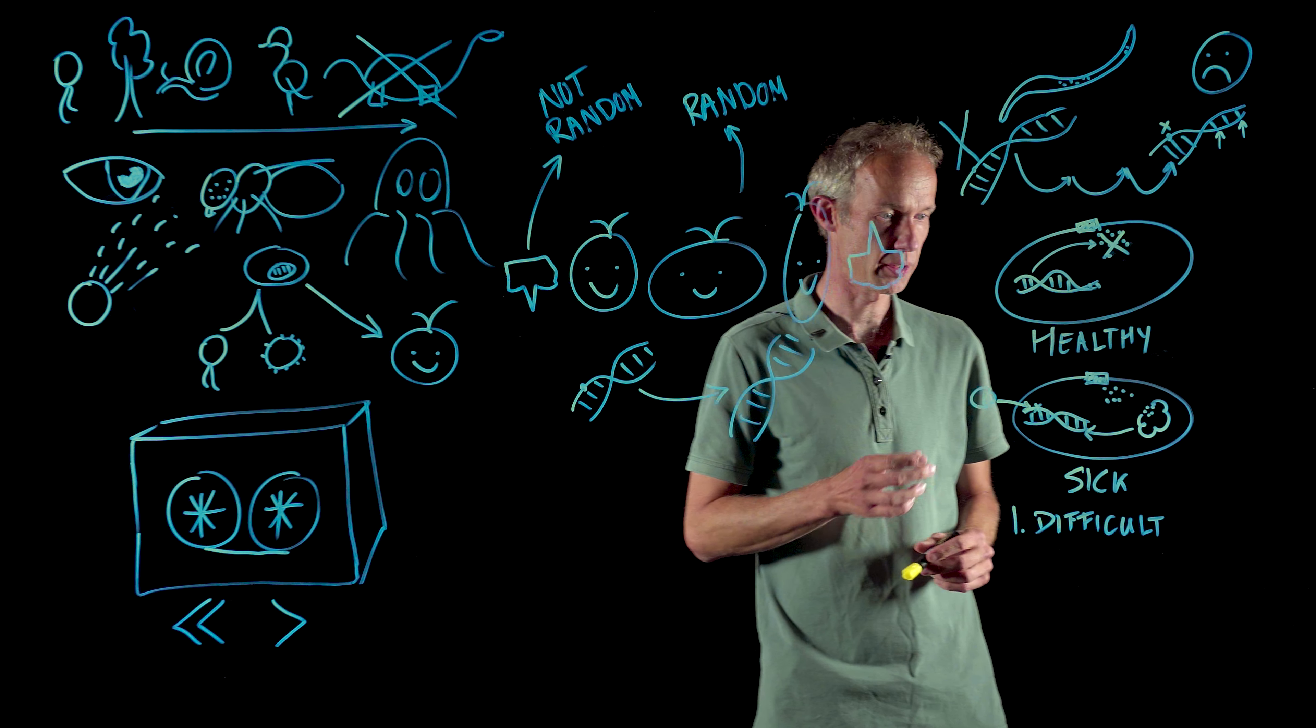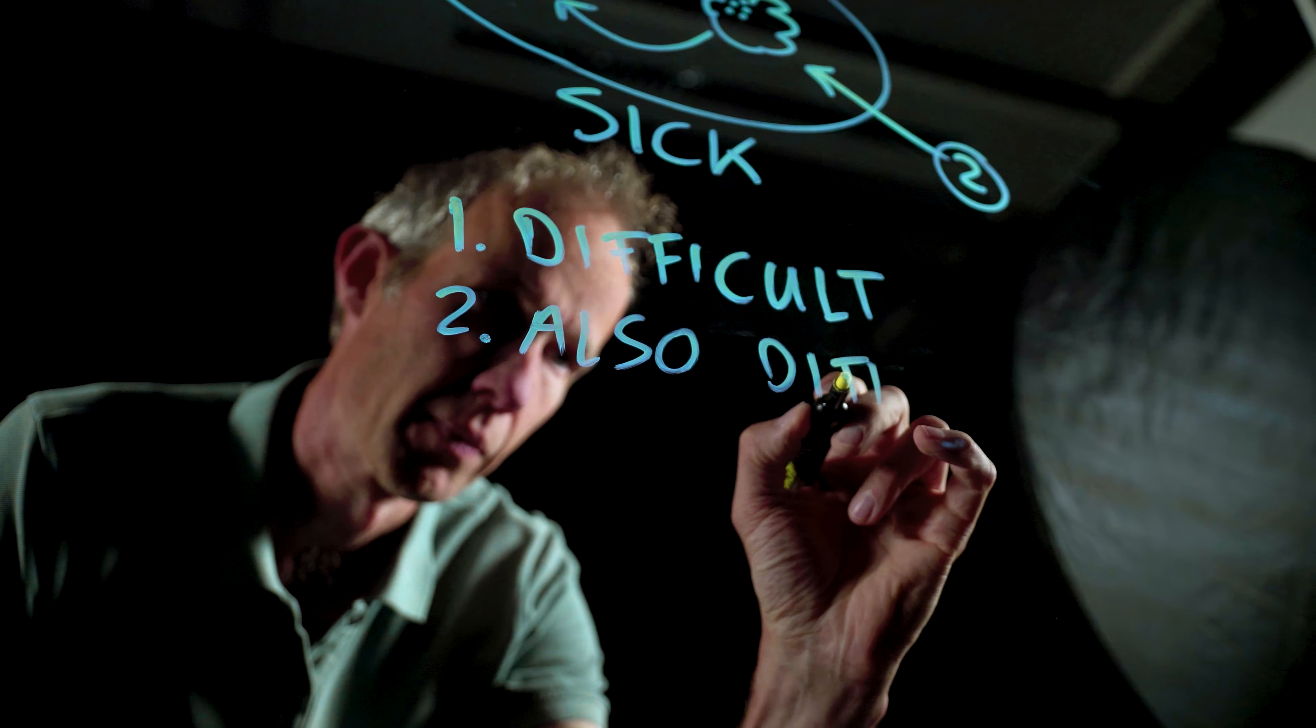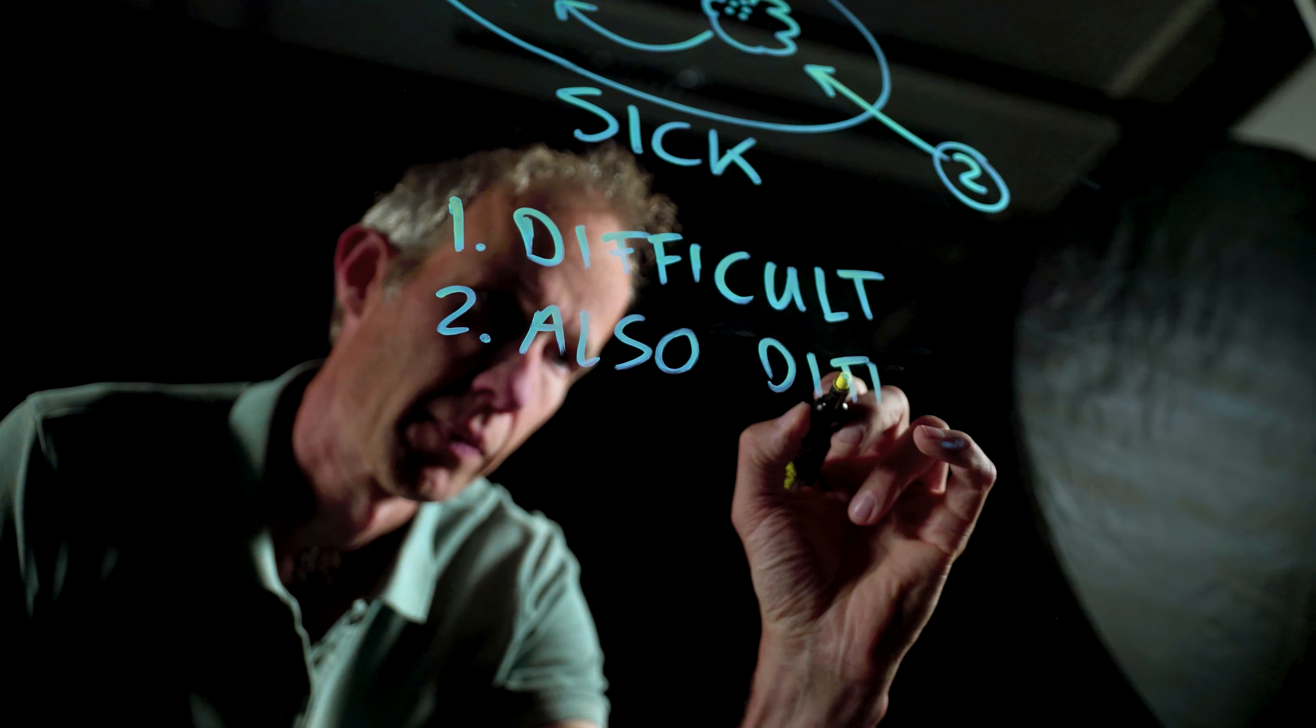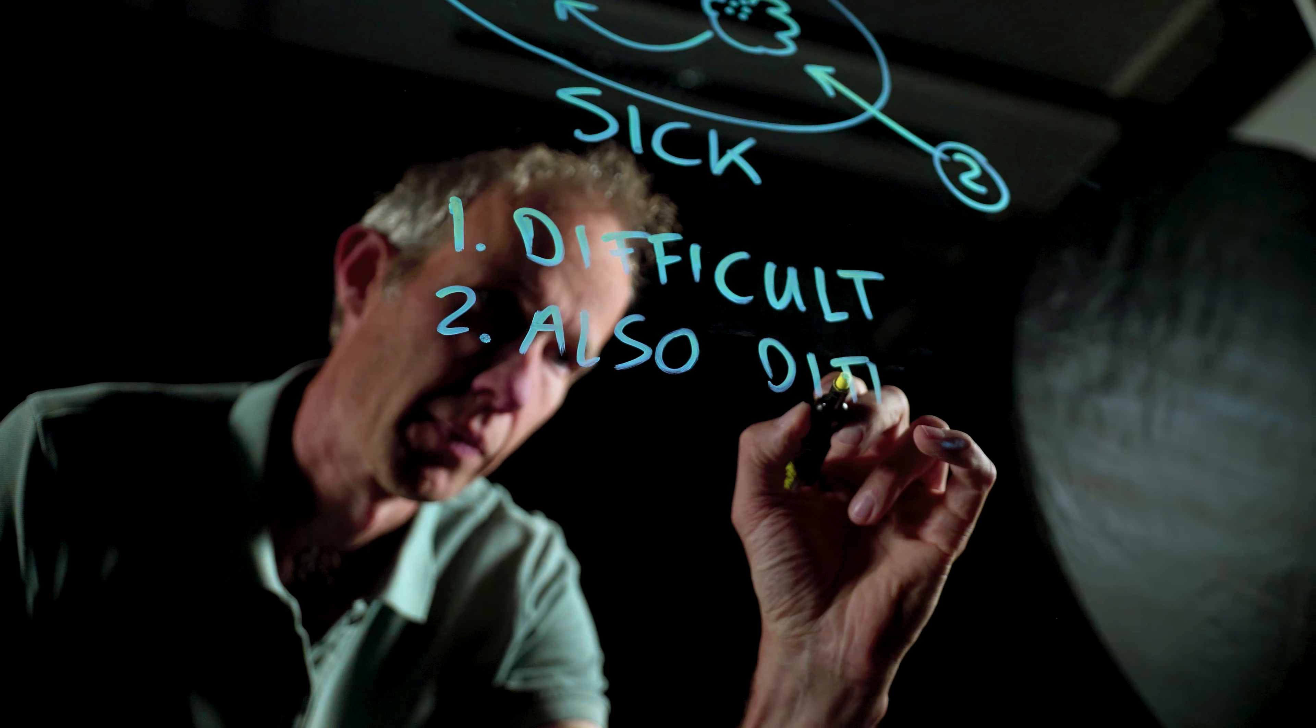And because we understand this system very well, we can predict that there are three ways in which the worm can solve this problem. The first one is by fixing the original mutation. This however is very difficult, like fixing a complicated machine that is broken.